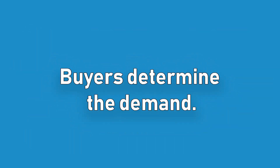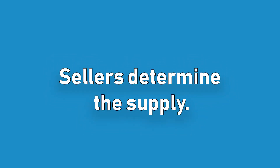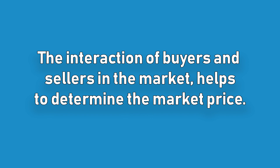Buyers, as a group, determine the overall demand for a product at various prices, while sellers, as a group, determine the supply of a particular product at various prices. The interaction of buyers and sellers in the market helps to determine the market price. The price is taken into account when deciding how much of something to consume and also how much to produce.